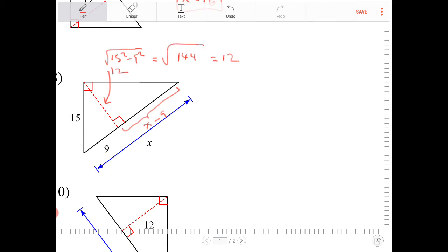So this is 12. So if that's the case, I can say X minus 9 times 9 is equal to 12 squared. I can divide both sides by 9, so X minus 9 will equal 16. Add 9 to both sides, I end up with X is equal to 25.